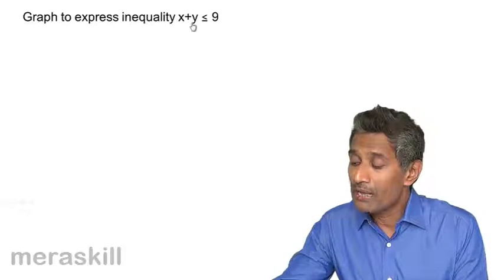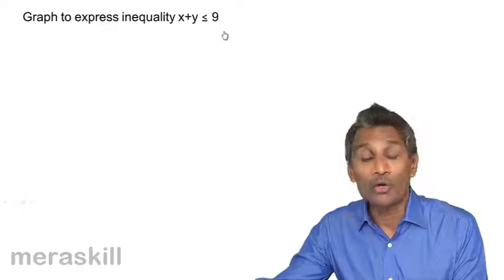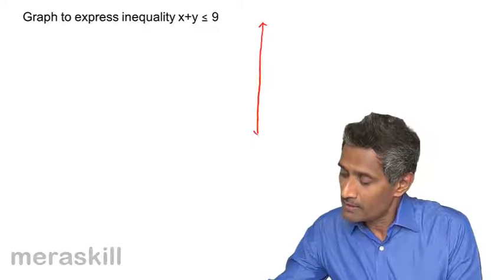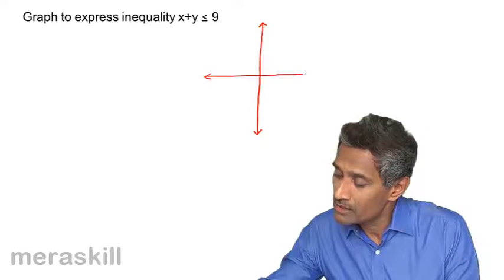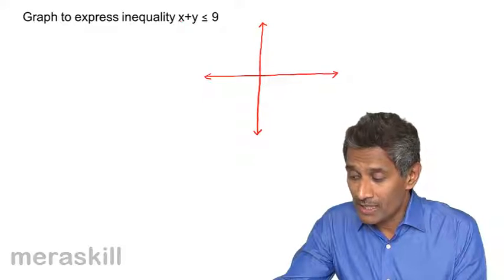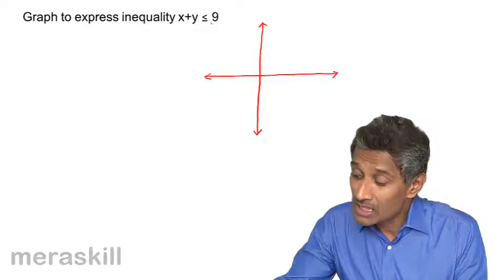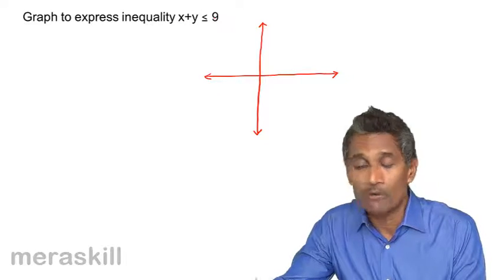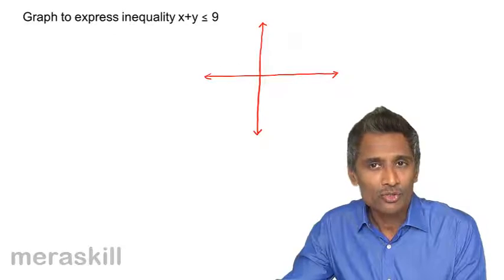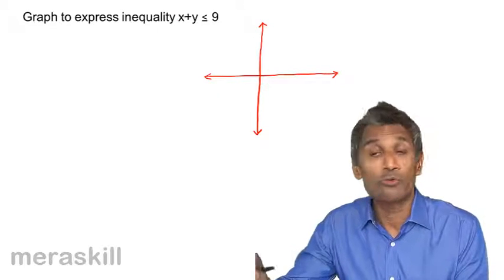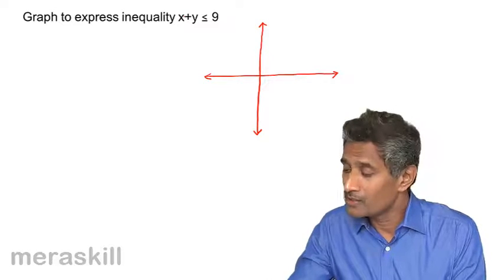Now let's take a real example. We have x plus y is less than or equal to 9, and we need to express this particular inequality. So let's draw a rough graph. We have the y-axis and the x-axis. We need to plot this line — it has one x term, one y term, and a constant. It's a linear inequality in two variables. This type of line will be inclined to the coordinate axes and will intersect both axes. We need two points to plot this line.